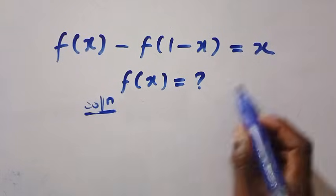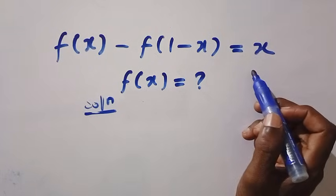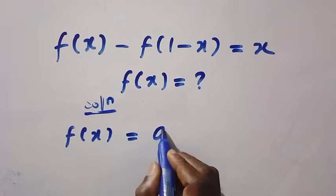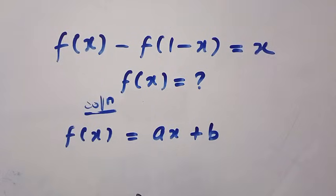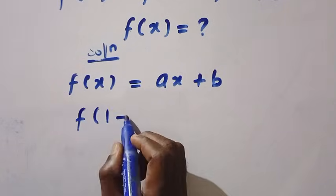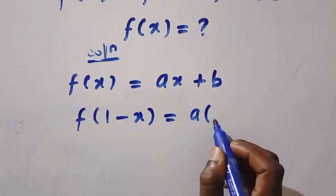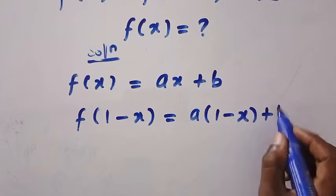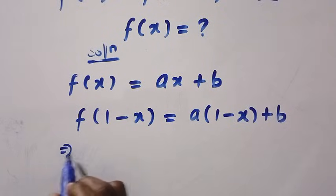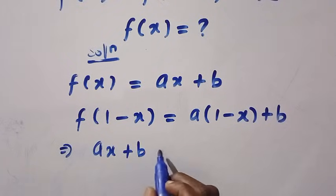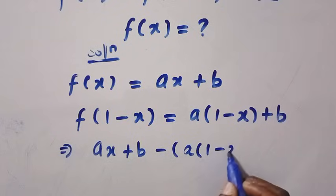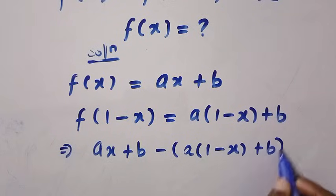If I consider the solution, looking at this side, the x here is linear. If I assume that f of x equals ax plus b — assuming this is a linear function — then we are going to have to replace x with 1 minus x. This equals a bracket 1 minus x plus b. Then equating this to each other, we have ax plus b, then minus a bracket 1 minus x, then plus b equals x.